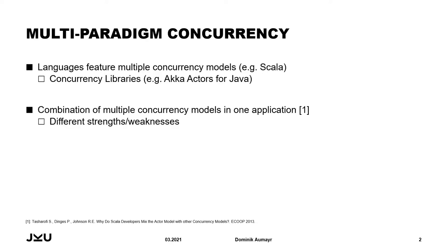To give some context to our research, I am going to explain the concept of multi-paradigm concurrency. Modern programming languages like Scala feature multiple concurrency models. In Scala, you have classical threads and locks alongside an actor implementation, and it is also possible to expand the available concurrency models by using a library that adds one, for instance the Akka actor library for Java. The presence of multiple concurrency models gives developers the opportunity to combine them and the freedom to choose which parts of an application they want to implement with a certain concurrency model.